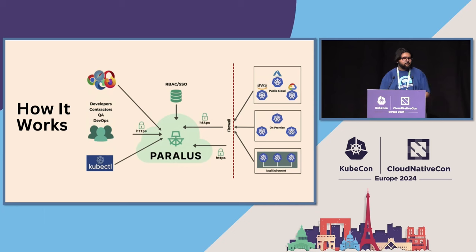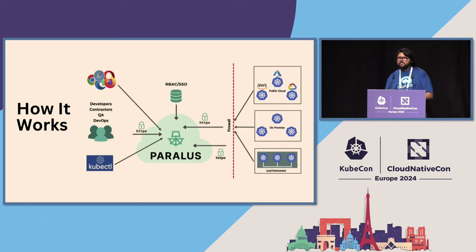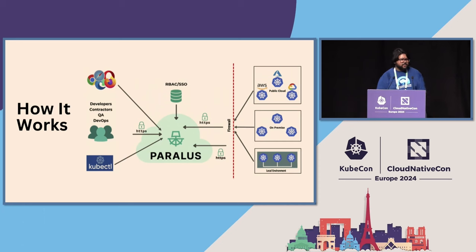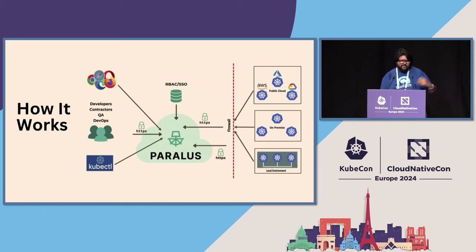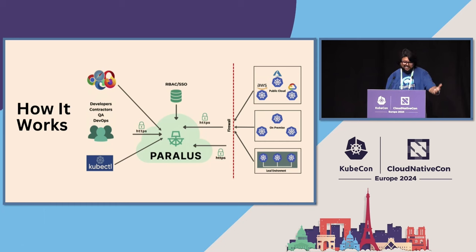Here's a high-level overview of how Parallels actually works. In simple words, it's a proxy that acts in the middle whenever any request is sent to your Kubernetes clusters. Internally, it uses Ory Kratos for identity management and CASBIN for admission policies. On the left-hand side, you can see developers, DevOps, and QA — these are the people who interact with Parallels.